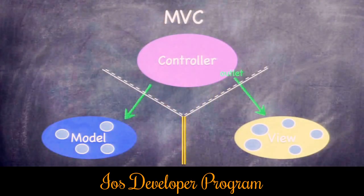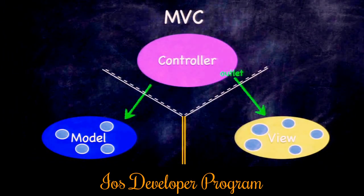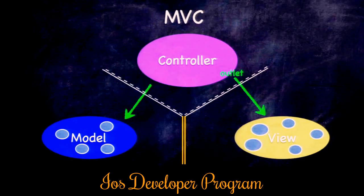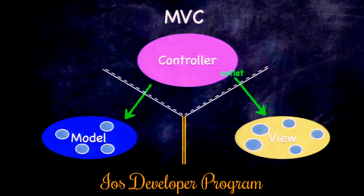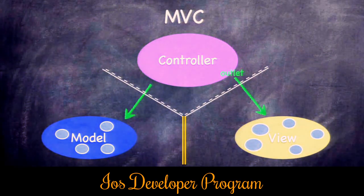Similarly, from the controller to the view is also unlimited communication. The controller is responsible for using its view minions to lay out the user interface. When a controller has a property pointing into the view, we call it an outlet — you'll see that in the demo on Wednesday.